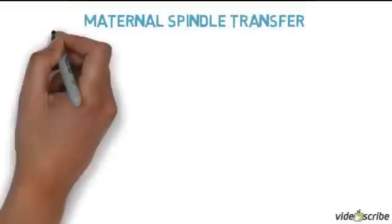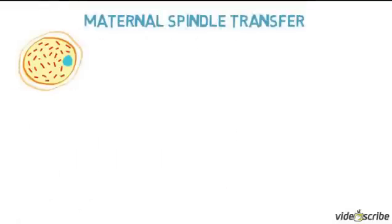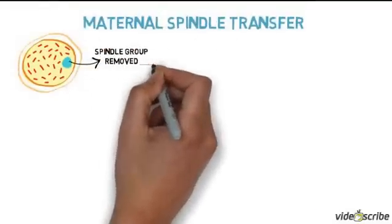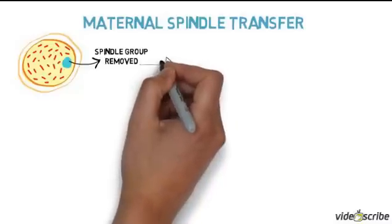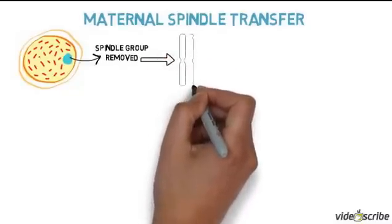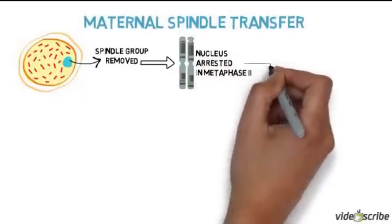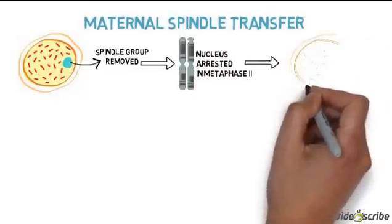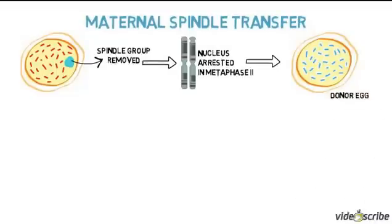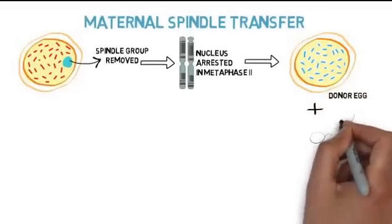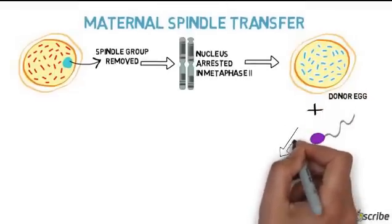The second method is maternal spindle transfer. Eggs are taken from the mother but are not initially fertilized. Instead, the spindle group is removed. This is the state of maternal chromosomes when the cell is arrested in metaphase II of meiosis. The spindle group is then implanted into a donor egg which has also had its spindle group removed. The egg is fertilized with the father's sperm.